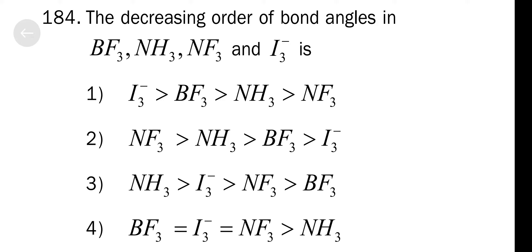The decreasing order of bond angles in BF₃, NH₃, NF₃, and I₃⁻ — very simple. I₃⁻ is sp3d hybridization, with two iodines arranged in a linear way, so the bond angle is 180 degrees. BF₃ bond angle we know is going to be 120 degrees.